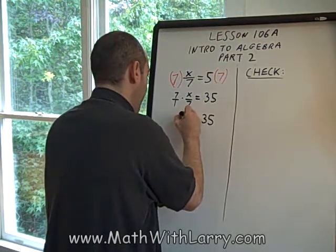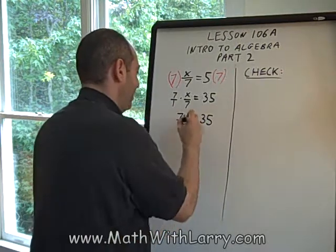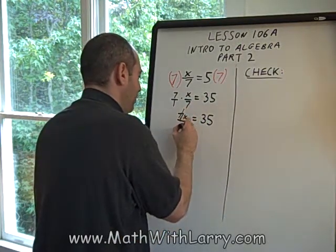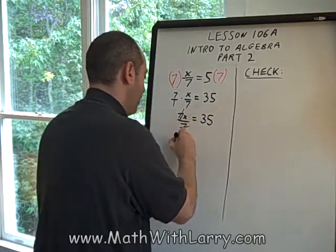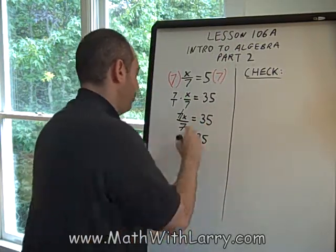On top, we have 7x. On the right, we have 7 times 1, which is 7. And now we can see, like we've seen before, the 7s just cancel because 7 over 7 equals 1. And x equals 35.